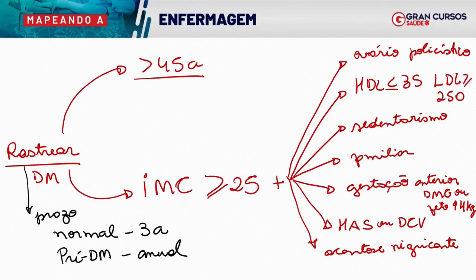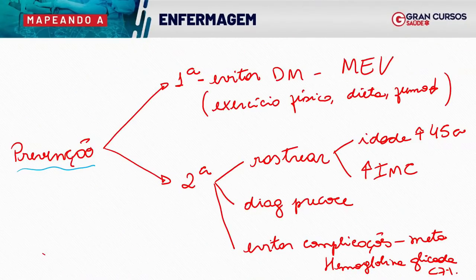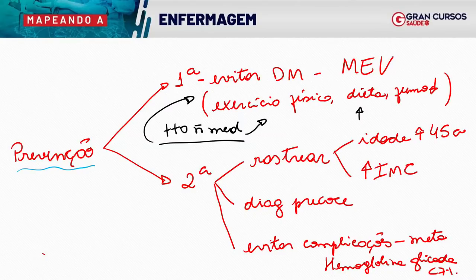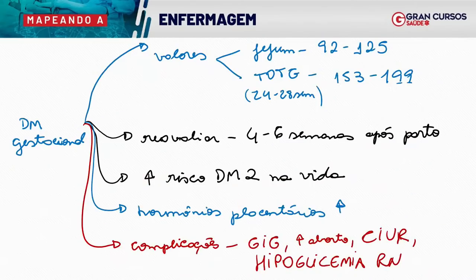O tratamento tem componente não medicamentoso — que envolve exercício físico, melhora da dieta, não fumar, não beber, usar estratégia cognitivo-comportamental e educação em saúde — e o tratamento medicamentoso. Vamos focar nos medicamentos do SUS e nas insulinas.